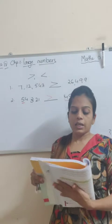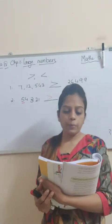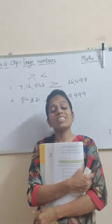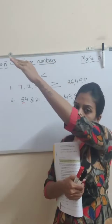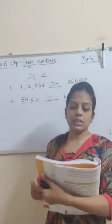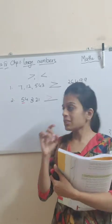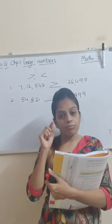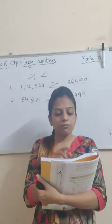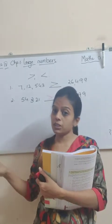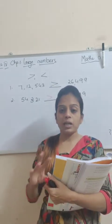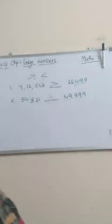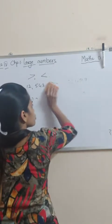Now, coming to page number 51, bit number B: arrange the following numbers in ascending order. First of all, students, ascending order means smallest to biggest. When you are doing smallest to biggest, first thing we usually do is the same — we see the first numbers. But here, he has jumbled the numbers and somewhere he has given a 5-digit number, somewhere he has given a 6-digit number. So first of all, you will separate the 5-digit numbers. I will show you once on the board.